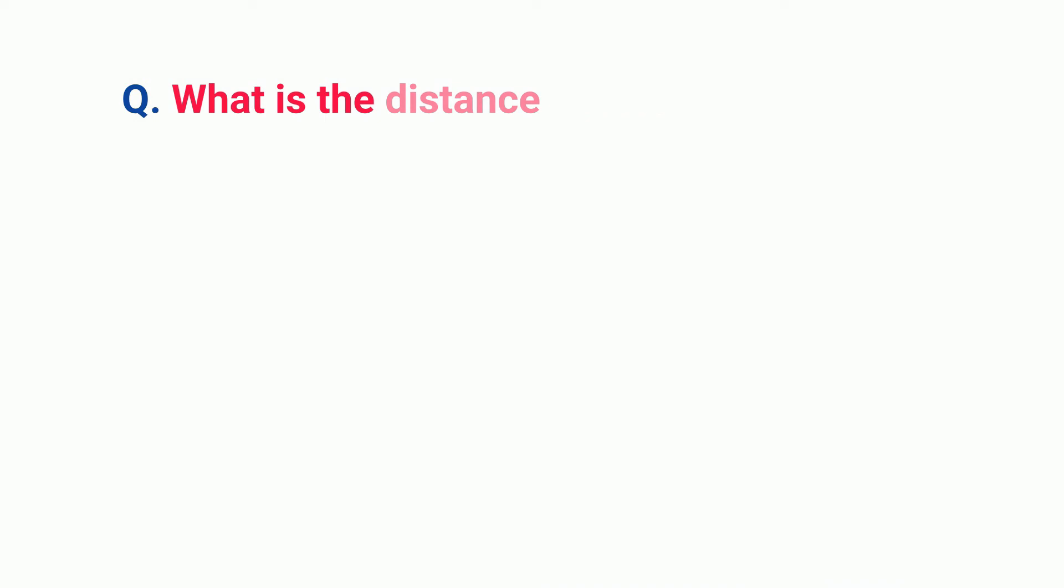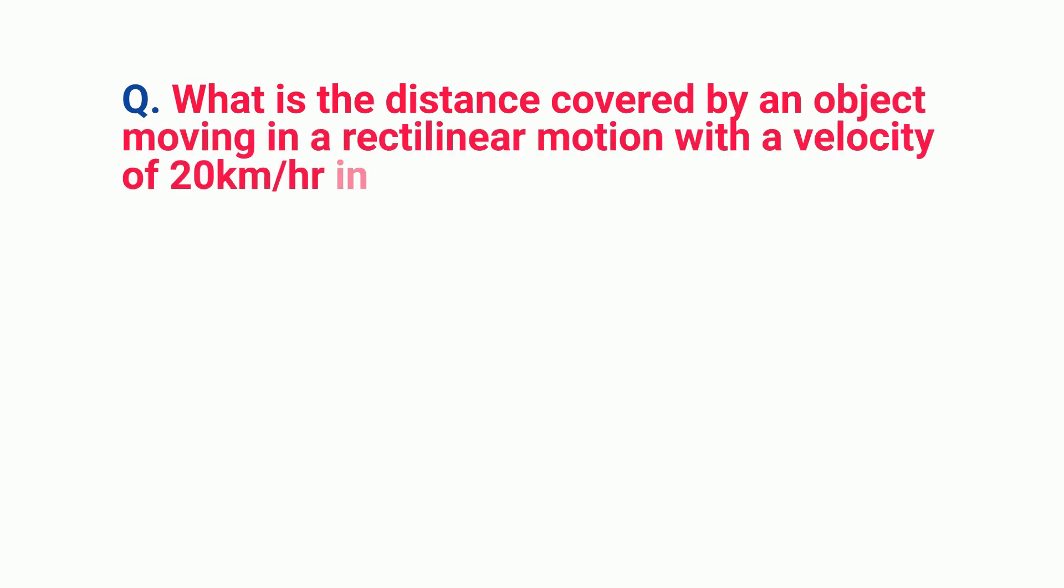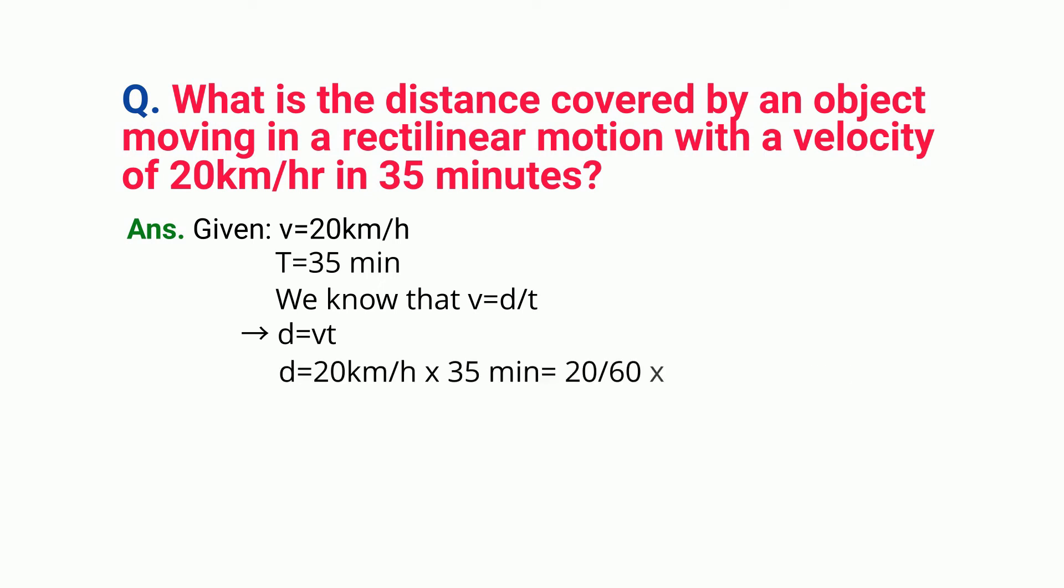What is the distance covered by an object moving in a rectilinear motion with a velocity of 20 kilometers per hour in 35 minutes? Given v equals 20 km/h, t equals 35 minutes. We know that v equals d/t, therefore d equals vt. D equals 20 km/h times 35 minutes equals 20/60 times 35 equals 11.67 kilometers. Hence, in 35 minutes the object will cover 11.67 kilometers.